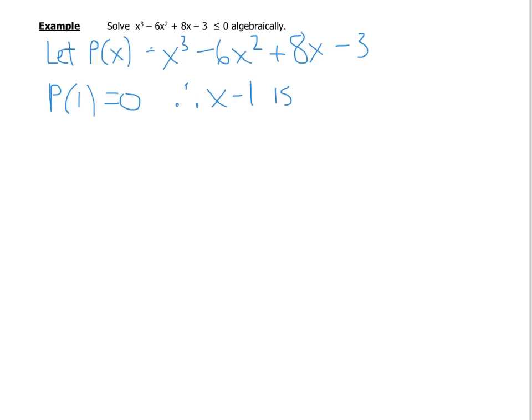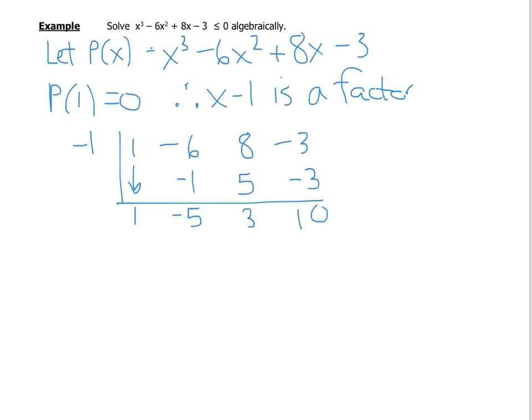So therefore, x minus one is a factor. So we'll set up our synthetic division. Negative five, right? Okay, so what we have is we have (x - 1) and we have (x^2 - 5x + 3), and we want to know this time when is that less than or equal to zero.